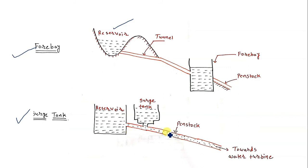If the water pressure exceeds its limit, the penstock could be damaged, so we must limit the pressure inside it. The location of the surge tank is near the powerhouse on high ground.